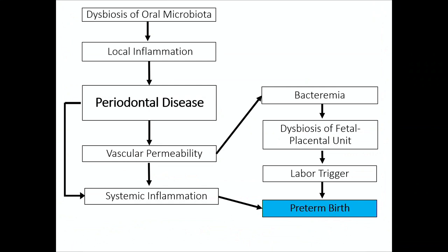That local inflammation leads to vascular engorgement and permeability, ultimately causing bacteremia that seeds the placenta and could trigger preterm birth. Independently, periodontal disease also leads to systemic inflammation, which can further contribute to preterm birth — so there are multiple different pathways from maternal periodontal disease to preterm birth.